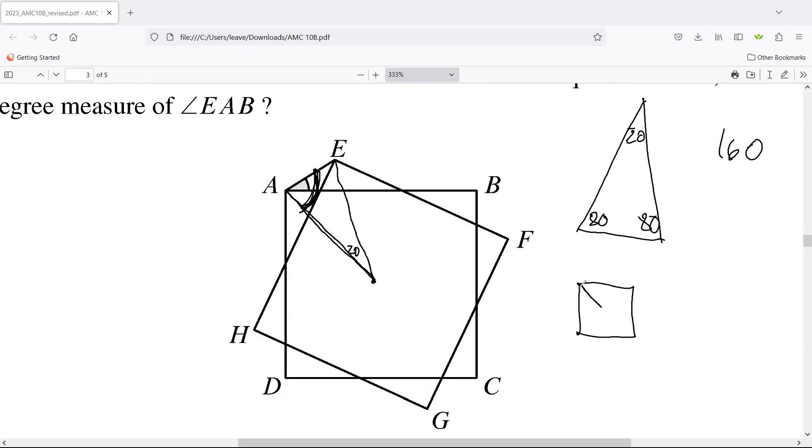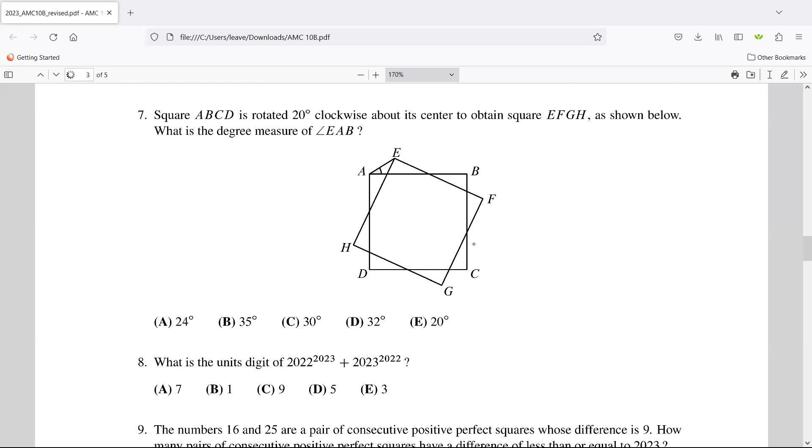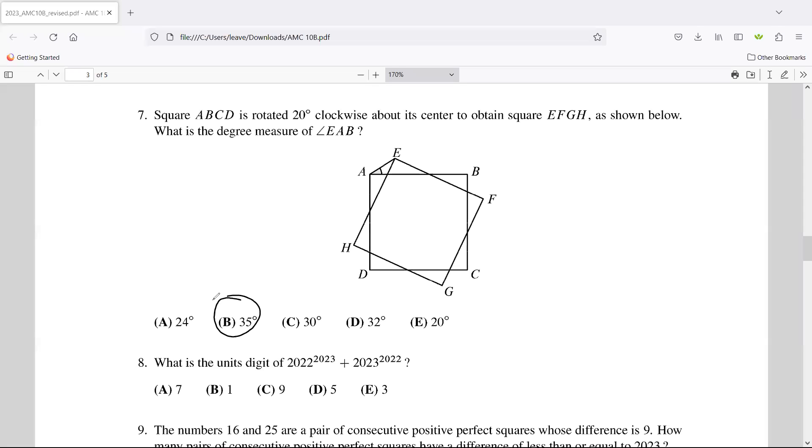You know because you connected A to the center that when you take a square and draw the diagonal, you have 45 degree angles. So this angle right here is 45 degrees. All we have to do now is 80 minus 45—the answer will be 35 degrees. That's answer choice B.